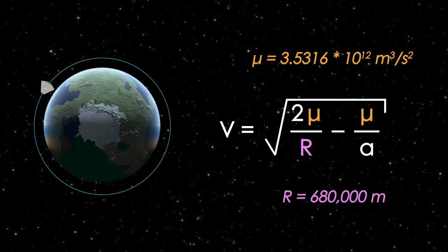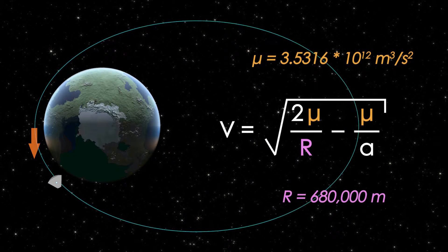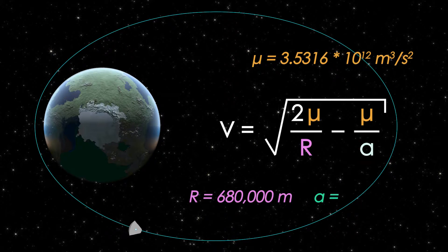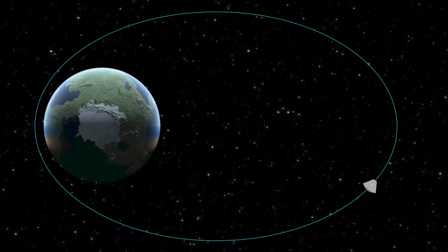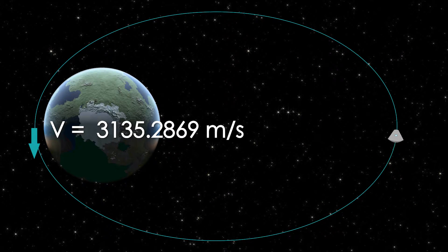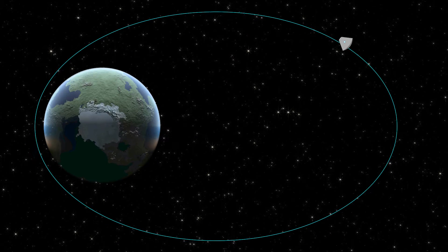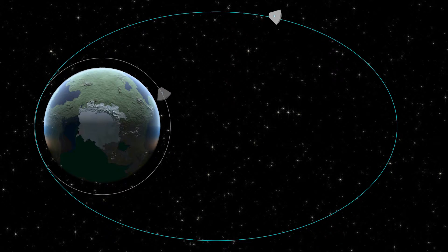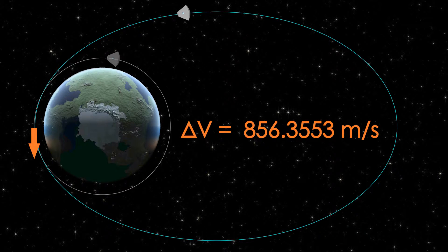Then, using the same equation, we can find our velocity after the burn by changing the semi-major axis to the new 6,340 kilometers, which we found earlier. This gives us a final velocity at periapsis of 3,135.2869 meters per second. Our delta-v is simply the difference between these two numbers, and that comes out to 856.3553 meters per second.